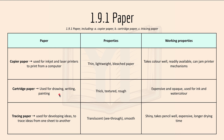Cartridge paper properties include it's thick, textured, and rough. Working properties include it's expensive and opaque, and is used for ink and watercolor. For tracing paper, it's used for developing ideas and to trace ideas from one sheet to another. Properties include it's translucent or see-through and smooth. Working properties include it's shiny, takes pencil well, it's expensive, and has a longer drying time.